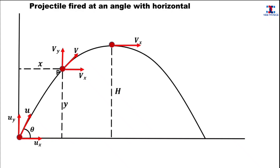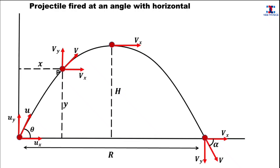After some time the projectile reaches the point of maximum height, represented by capital H. At this point the vertical component of velocity is 0, and all it has is only the horizontal component of velocity. Finally, the projectile hits the ground, and the maximum horizontal distance covered during projectile motion is called the range, represented by capital R.